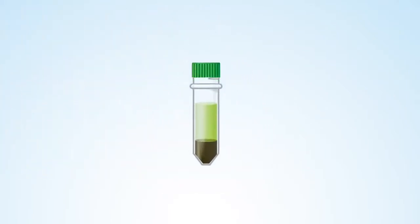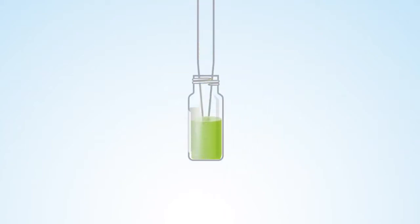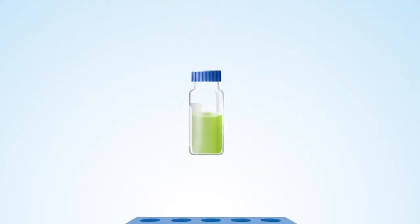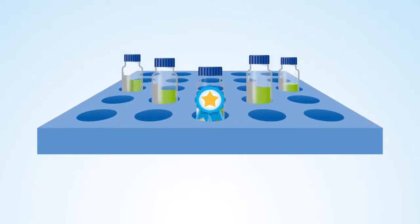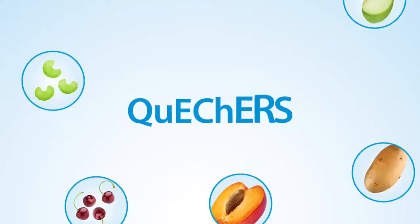Once centrifugation is complete, transfer the supernatant into an auto-sampler vial and make any final adjustments required for your sample. And that's it! You're done! Your sample is now ready to be analyzed.